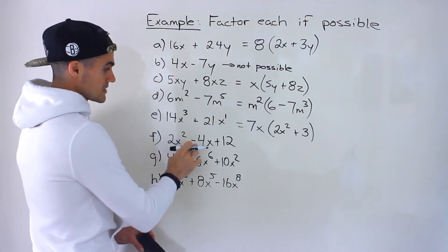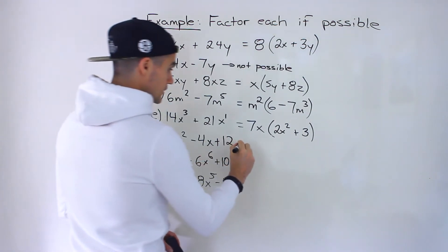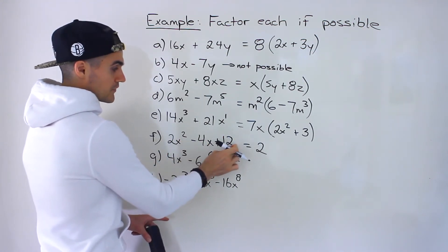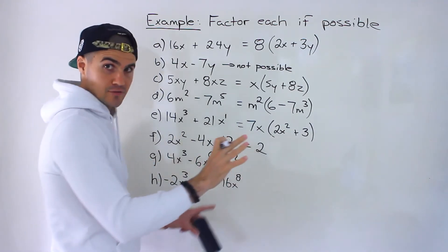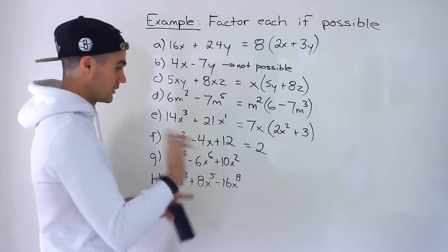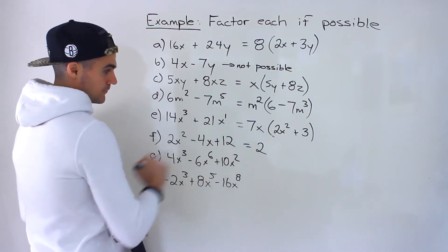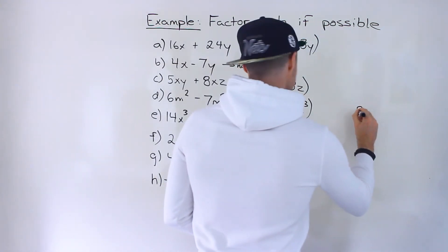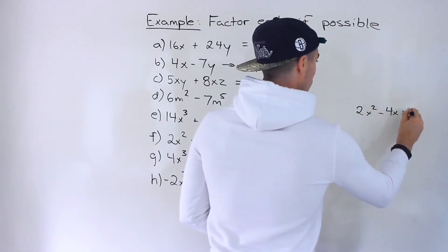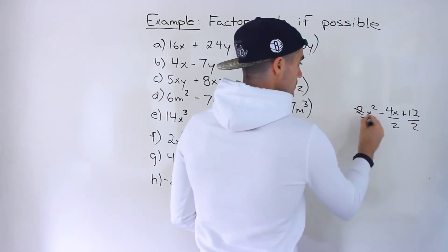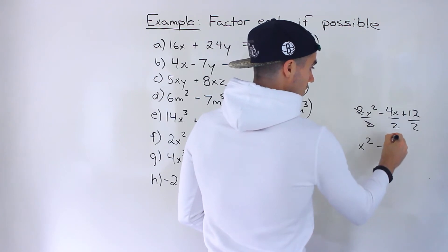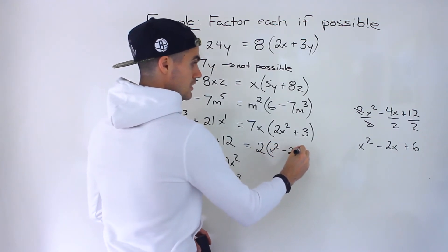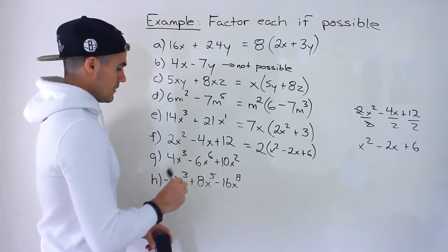Part F: 2x squared minus 4x plus 12. With all the numbers we can take out a 2, but not all terms contain an x — we have x², x¹, but no x in the constant 12. So we can only take out a 2. Dividing everything by 2: x squared, 4x over 2 gives 2x, and 12 over 2 gives 6. So we get 2(x² - 2x + 6).